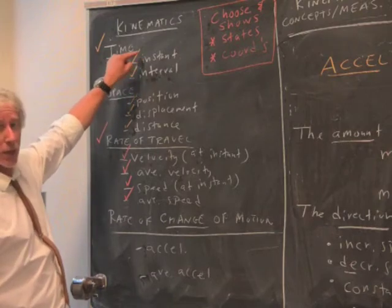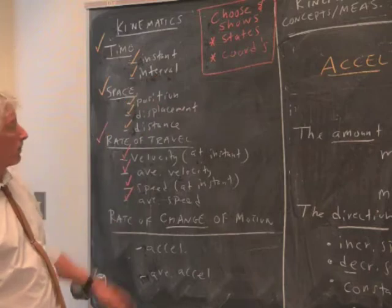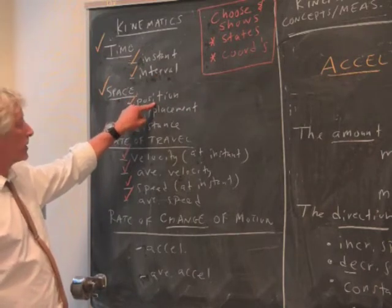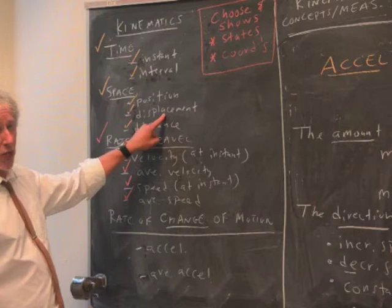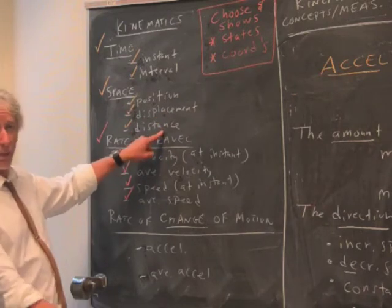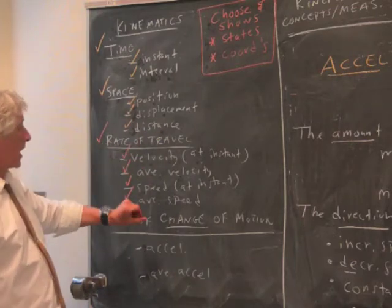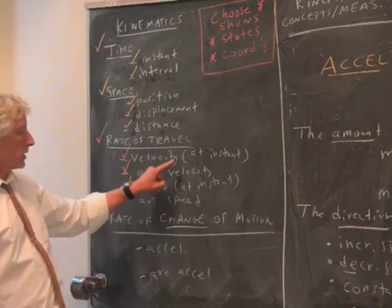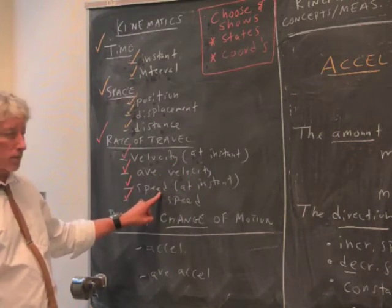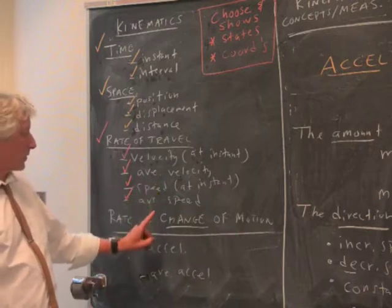Time one, time two, time three, time four — and the time between, from earlier to later. Space: we've got position at any moment. Displacement — just the change of position, independent of how you got there. Distance along the path does depend on how you got there. Rate of travel: we've got velocity at any instant, which is both the speed and the direction. Just the speed, average velocity versus average speed.